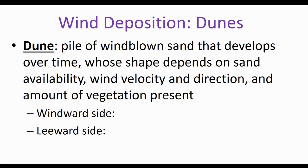A dune is an example of wind deposition. A dune is a pile of windblown sand that develops over time. Its shape is going to depend on sand availability, wind velocity and direction, and the amount of vegetation present. The windward side of the dune always has a gentle slope, and the leeward side of the dune is going to have a steeper slope — this is the side that's protected from the wind.